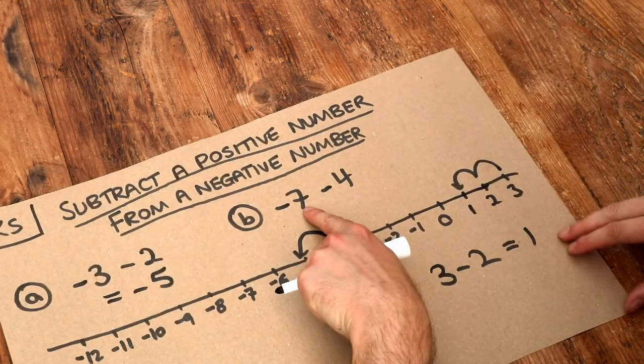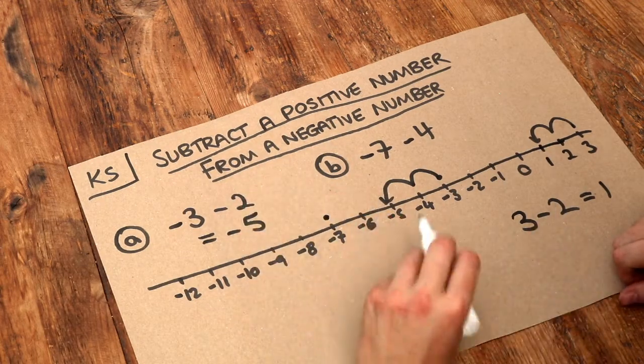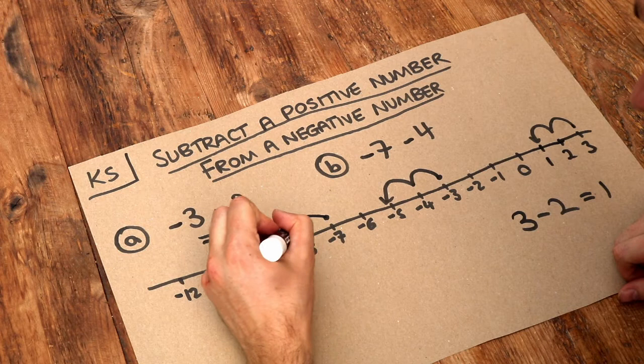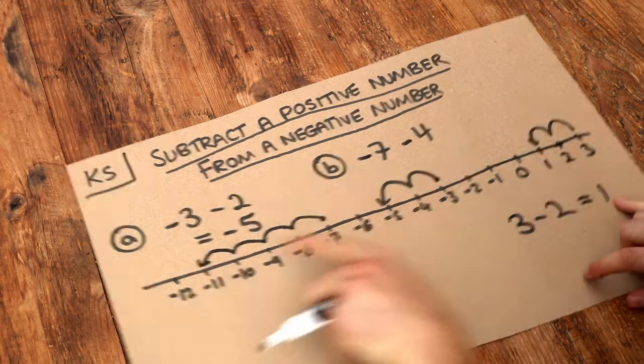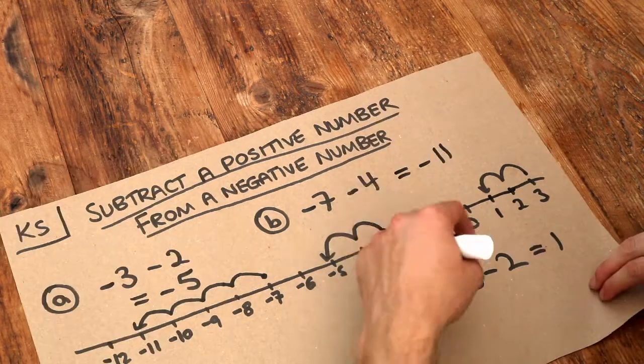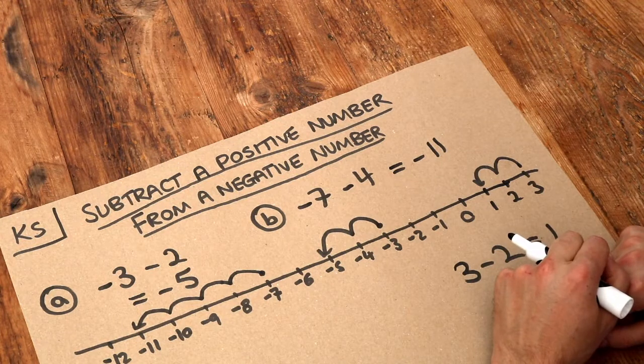And what about this one? We're at minus 7 and we're subtracting 4. So we start at minus 7, we subtract 4, so we move 4 down the number line, 1, 2, 3, 4, and you can see I'm now at minus 11. And again, notice that 7 plus 4 is 11, but we're kind of in the negative world here.